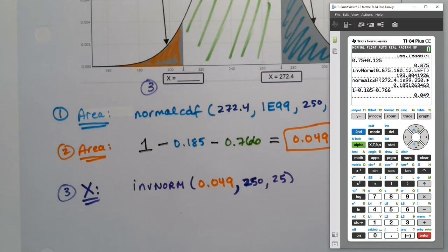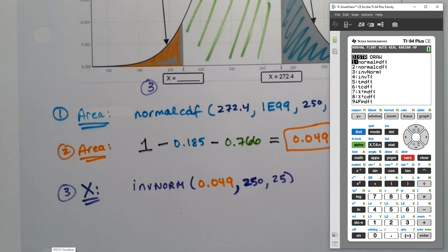All right, so let me grab that. And in case you missed it, you're doing a left, right? It's a left tail area. Yeah, so 0.049, 250, 25, left, enter.